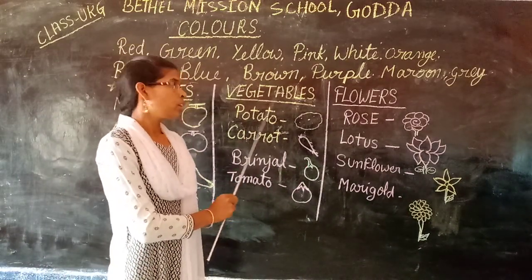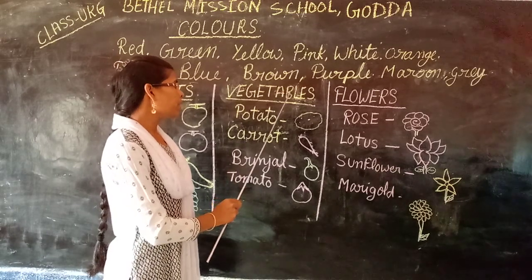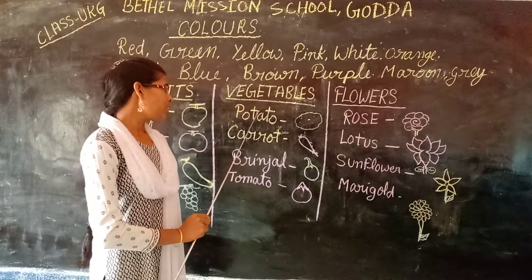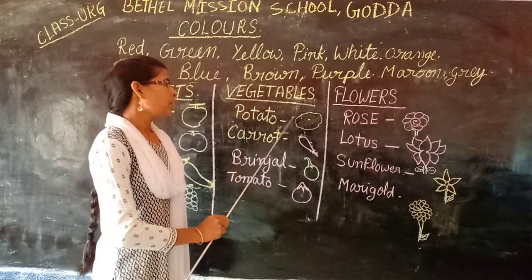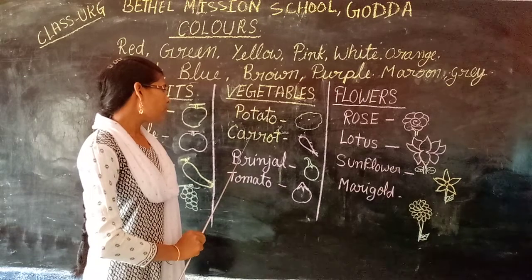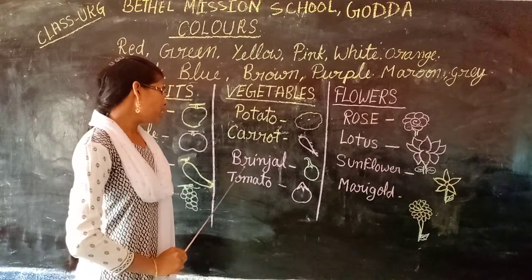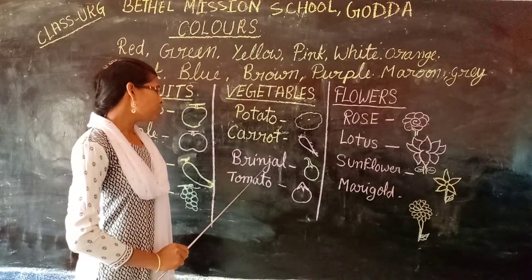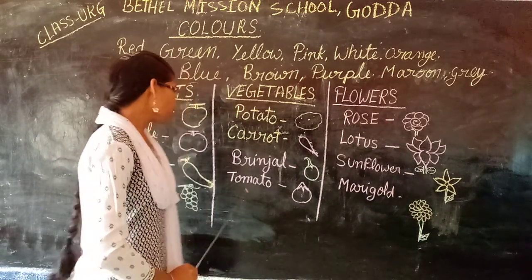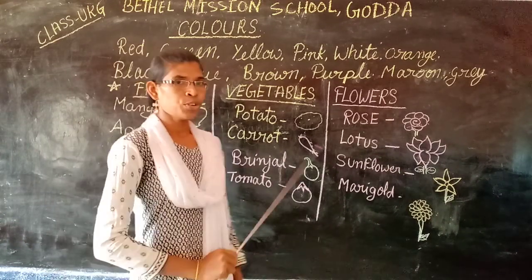Vegetables. Now let us see the vegetable colors. Potato. P-O-T-A-T-O. Potato. It is brown in color. Carrots. C-A-R-R-O-T. Carrots. It is red in color. Brinjal. B-R-I-N-J-A-L. Brinjal. It is purple and green in color. Tomato. T-O-M-A-T-O. Tomato. It is red in color.